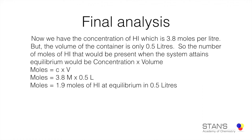Since the volume of the container is only 0.5 liters, we converted moles to moles per liter to express concentration. We must now find the actual number of moles in 0.5 liters. Since C = N/V, we have N = C × V = 3.8 M × 0.5 liters = 1.9 moles of hydrogen iodide present at equilibrium in 0.5 liters. That is the expected answer.